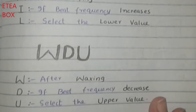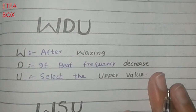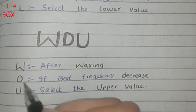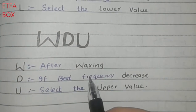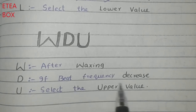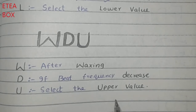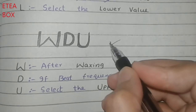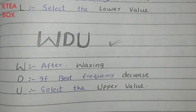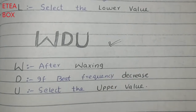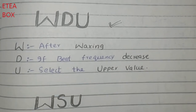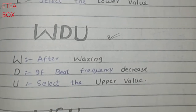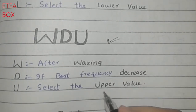The second rule is WDU. After waxing, if the beat frequency decreases, then you have to select the upper value.